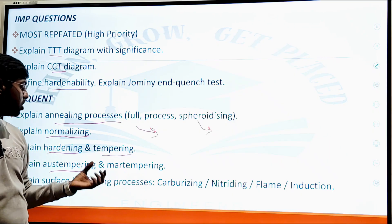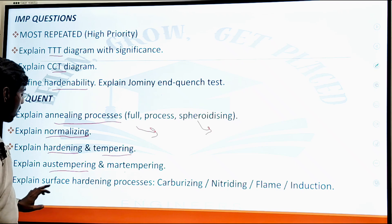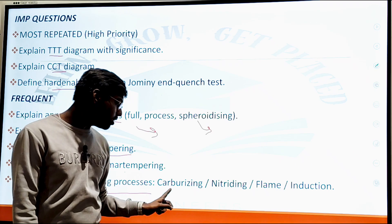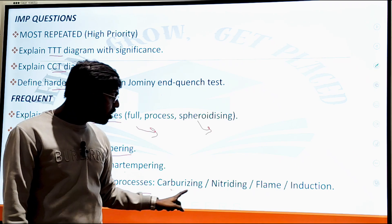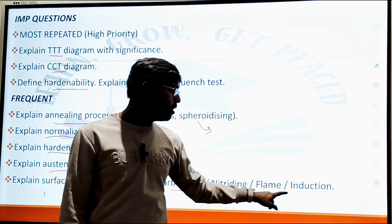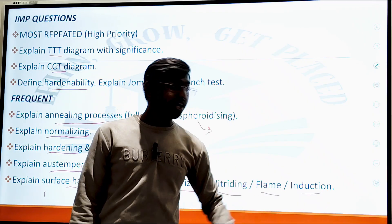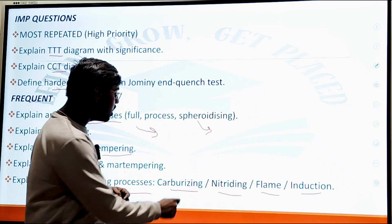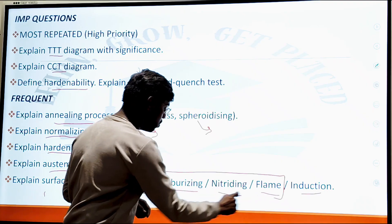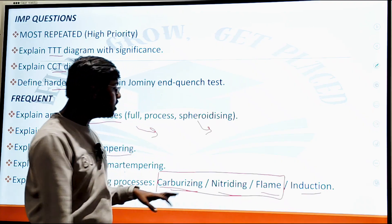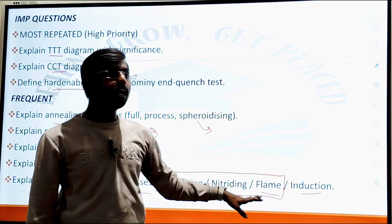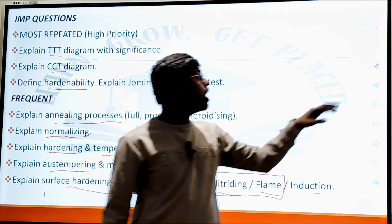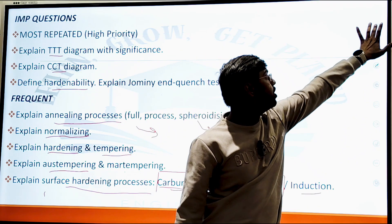Martensite and austenite phases are asked with tempering — explain these two phase diagrams along with their grain or material structure. The last topic is surface hardening processes: carburizing, nitriding, flame hardening, and induction hardening — four types are asked. Carburizing, nitriding, and flame hardening are the most frequently and repeatedly asked.